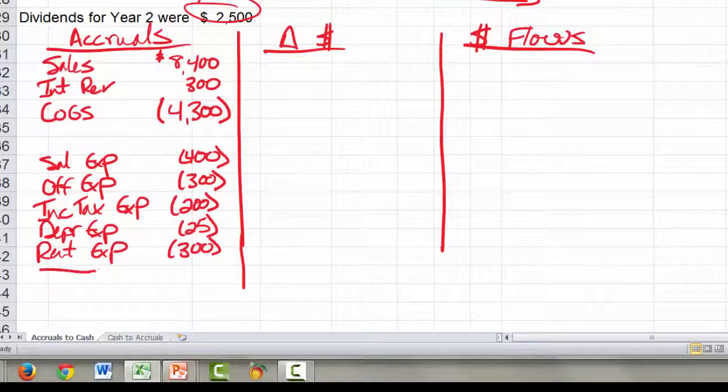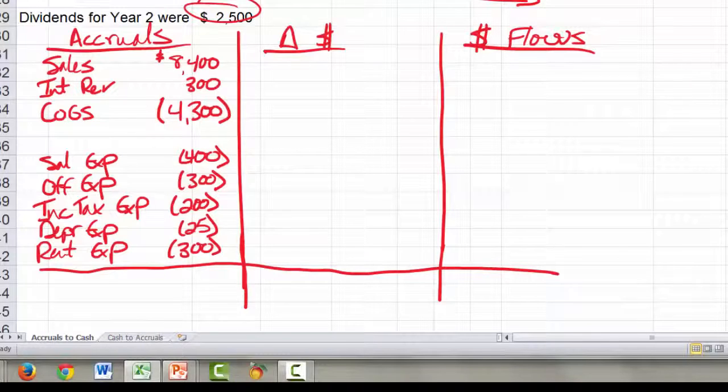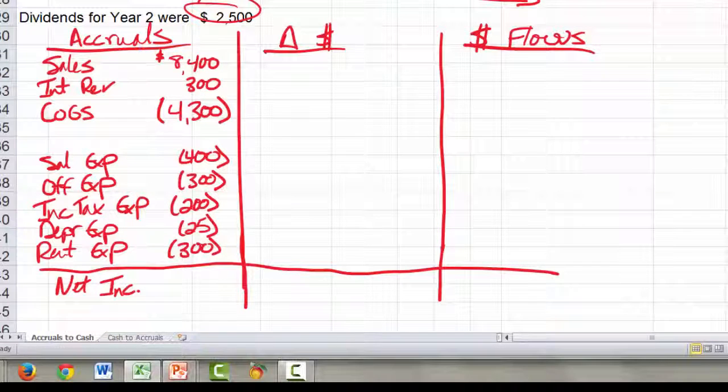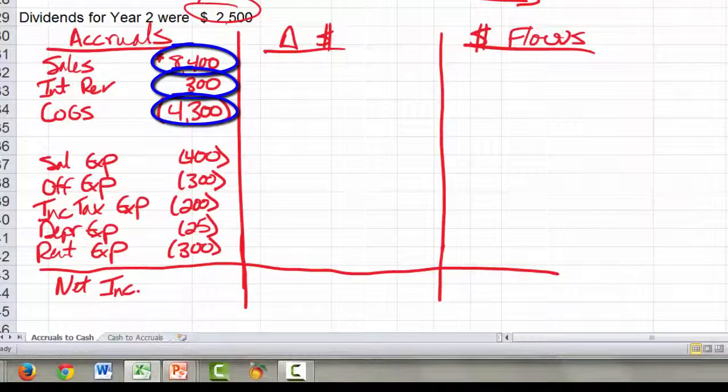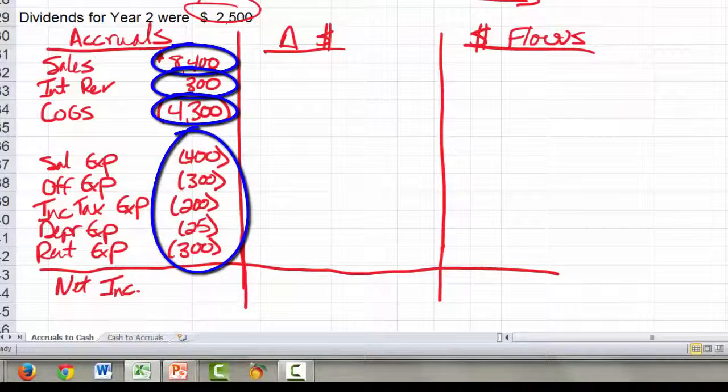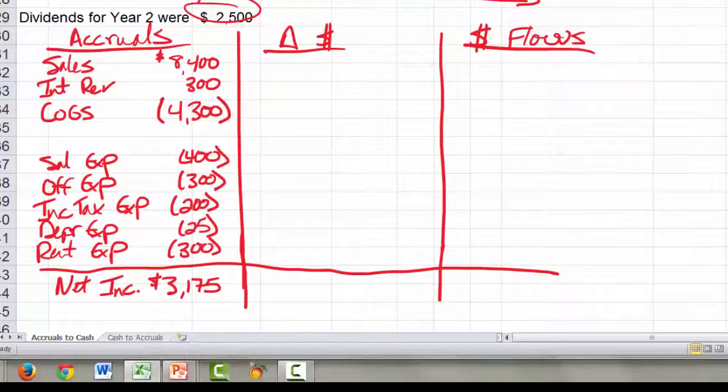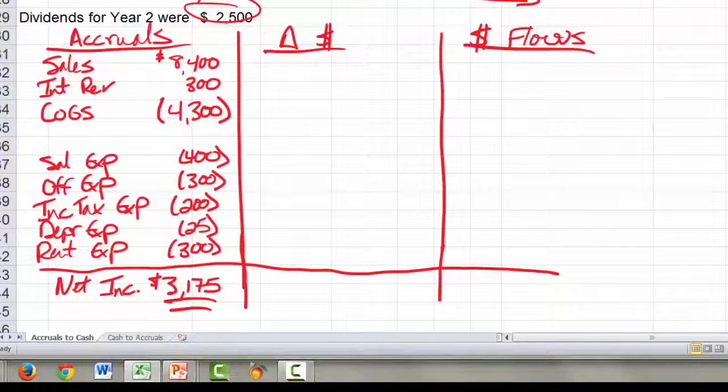I'm pretty sure that I got everything here, but take a second and make sure that if you add up that column, you get net income. So $8,400 plus $300 minus $4,300 minus all the expenses. Yep, looks like we come out just fine. $3,175, just like we should. So that's step three.